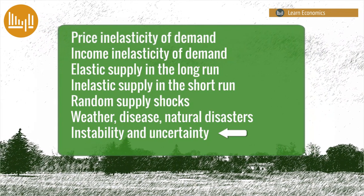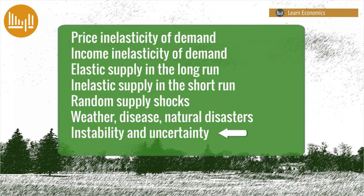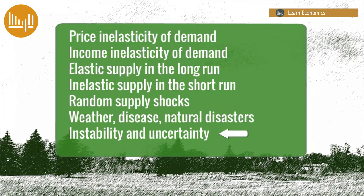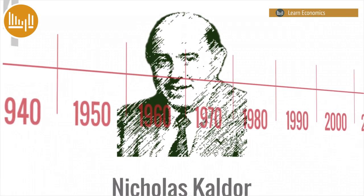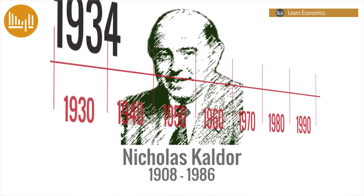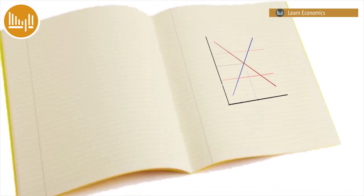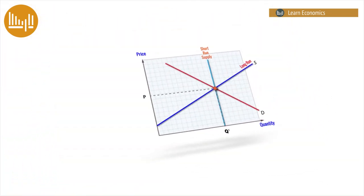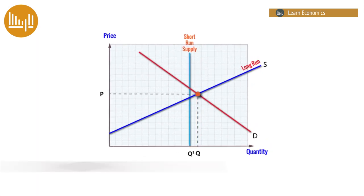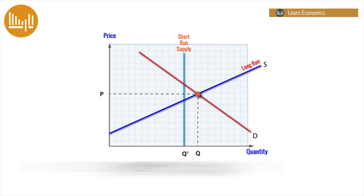One of the earliest economic models to explain this is the dynamic cobweb theorem, which was developed by several economists in the 1930s, including Nicholas Kaldor in 1934. If the market starts with a stable equilibrium and then is subject to a negative supply shock, the short-run supply curve will shift to the left, with actual output lower than planned, raising price as fewer goods are taken to market. Diagrammatically, the new price is at the intersection of short-run supply and demand at price P1.